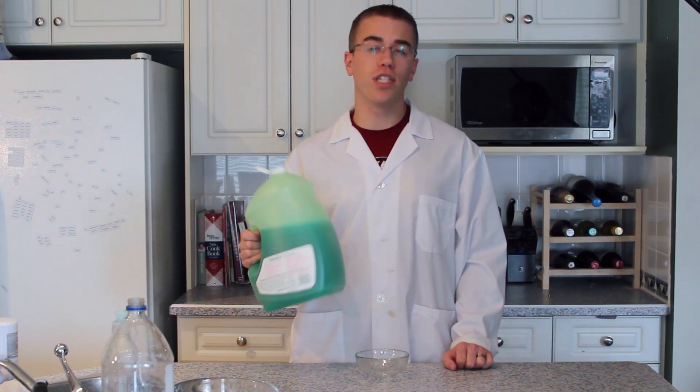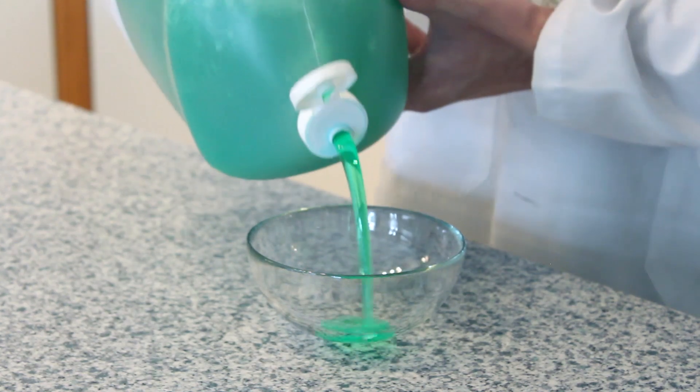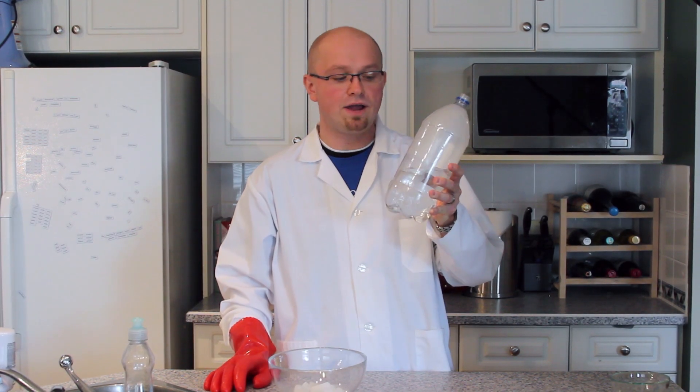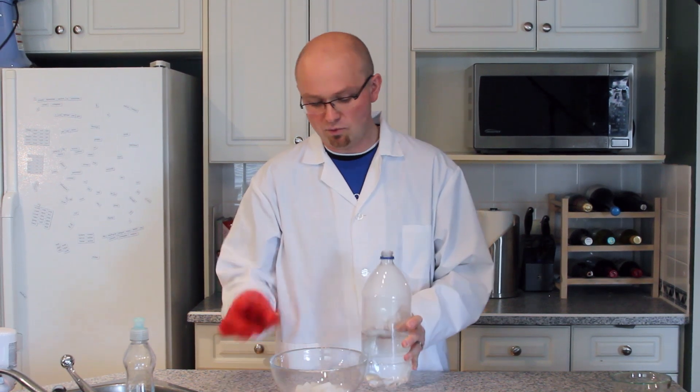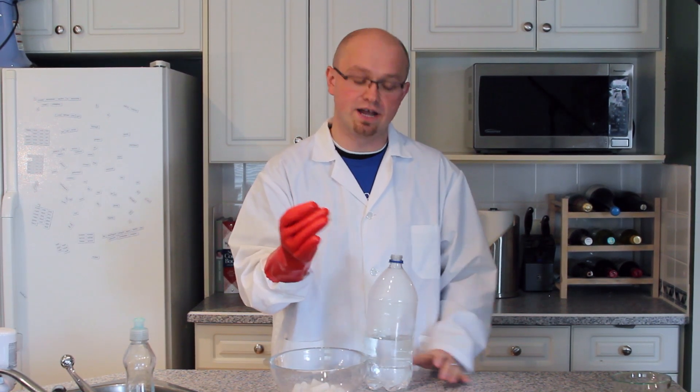The second step is to take your dish soap and pour it into your small bowl. For our third step we're going to take our bottle and fill it up about half full with hot water. At that point we're ready to put in about five or six pieces of dry ice.